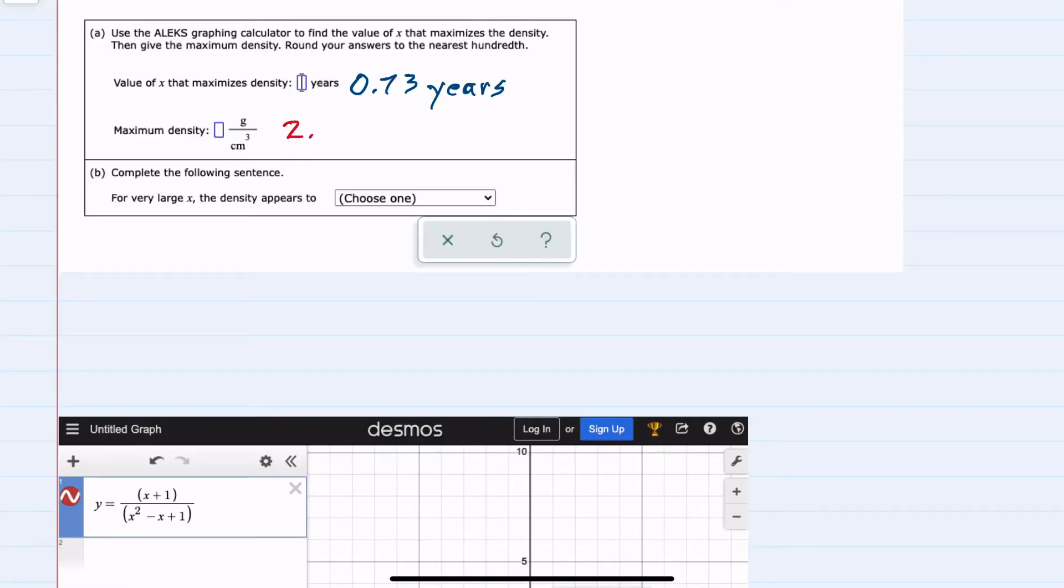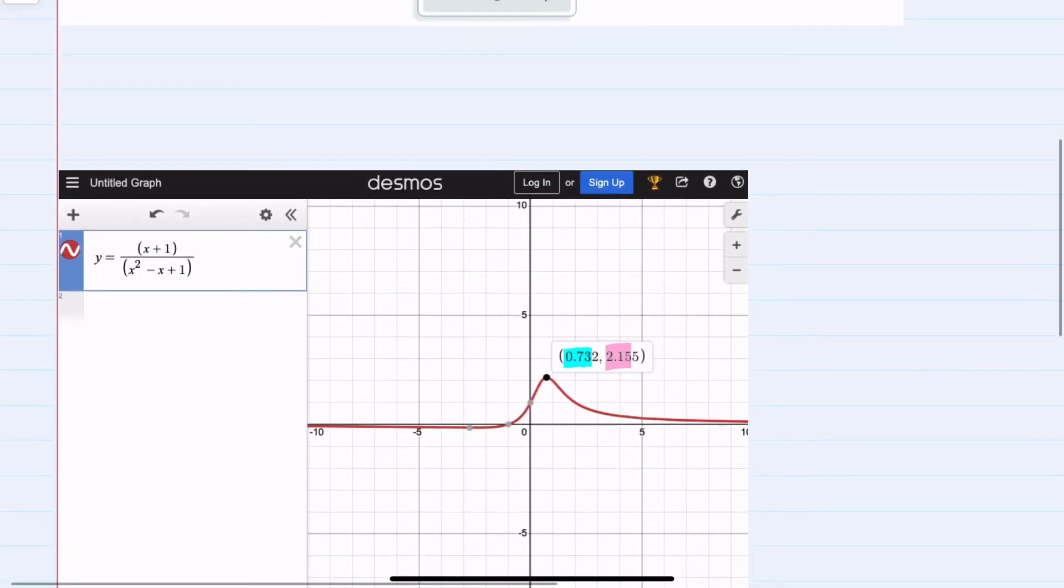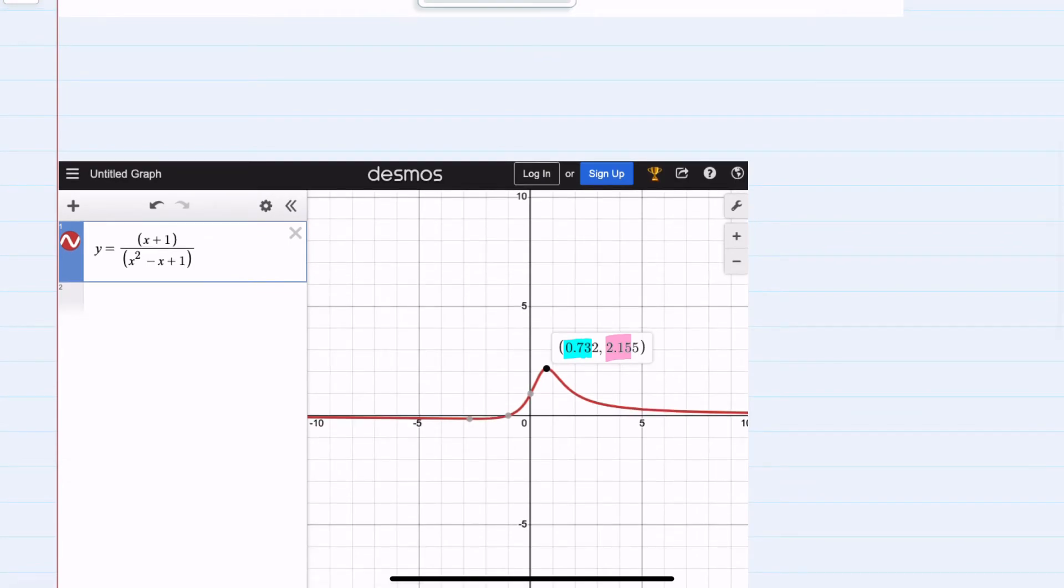So 2.16, and our units here are grams per centimeter cubed. So looking at this graph, we can see where the maximum density occurs and what that maximum density is.